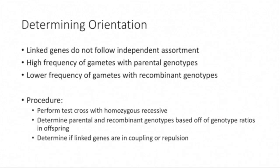So now we're going to move on to how you would determine whether a heterozygote with two linked genes is in coupling or repulsion. As you know, linked genes display non-independent assortment, meaning that the observed ratios of the gametes do not follow the expected ratios of Mendelian genetics. Linked genes tend to be inherited together rather than being inherited independently of one another. So we would end up seeing more gametes with parental genotypes. However, crossing over can still happen between linked genes, resulting in some, but very few, recombinant gametes.